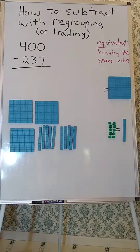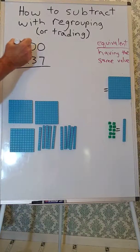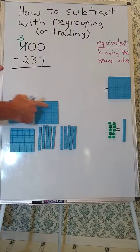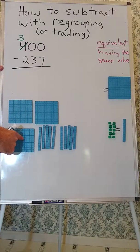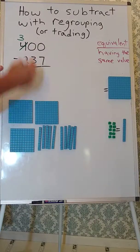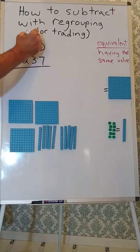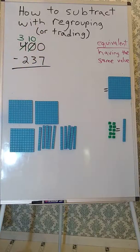Okay, what did we do? We traded 100, and that left us with only 300s, and we got 10 tens. We didn't have any before, now we have 10.